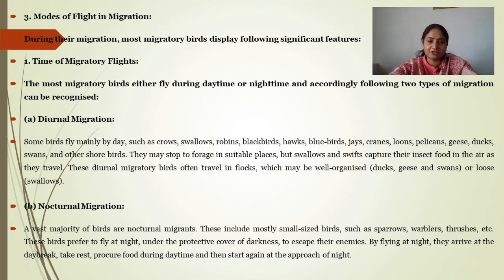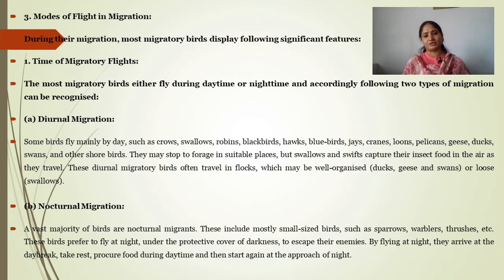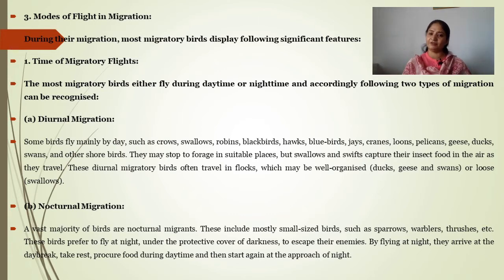A vast majority of birds are nocturnal migrants. These include mostly small-sized birds such as sparrows, warblers, and thrushes. These birds prefer to fly at night under the protective cover of darkness to escape from their enemies. By flying at night, they arrive at daybreak, take rest, procure food during the daytime, and then start again approaching the night. For long-distance travel, they rest during the day and fly at night, protecting themselves from predators.